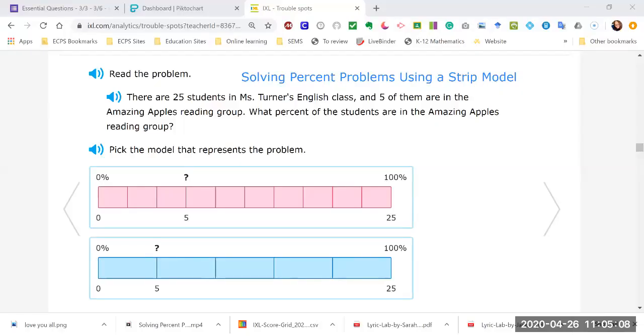Okay, so today I'm going to go over some problems with solving percent problems using a strip model. In this problem it says there are 25 students in Ms. Turner's English class, five of them are in the Amazing Apples reading group. What percent of students are in the Amazing Apples reading group?